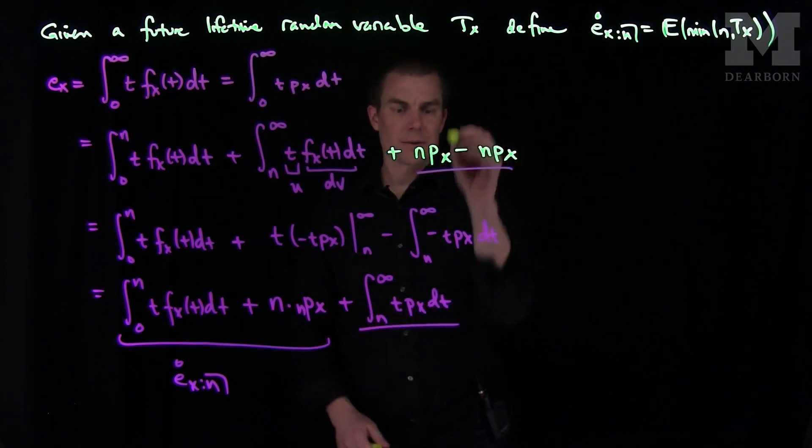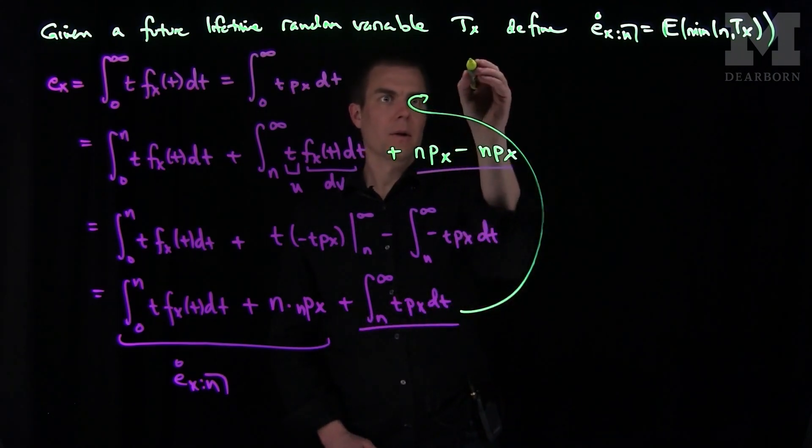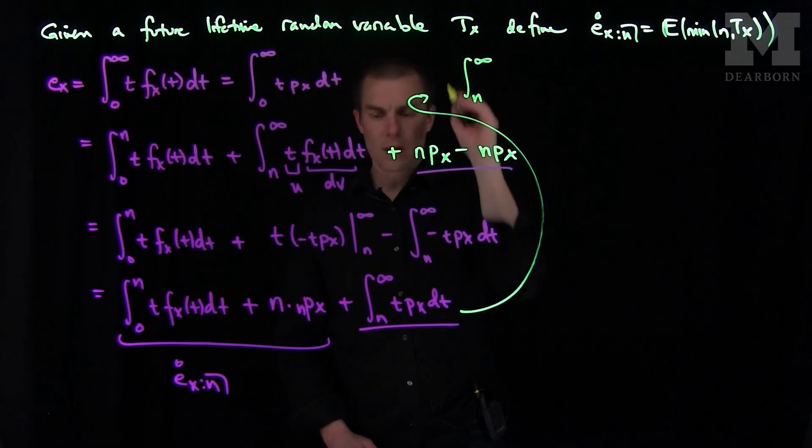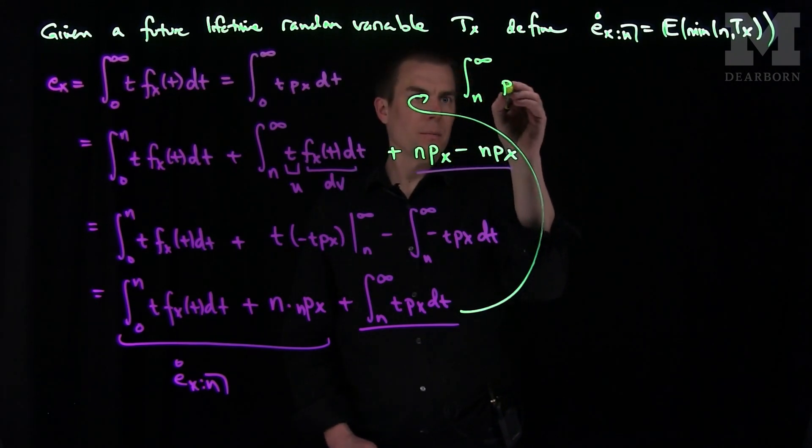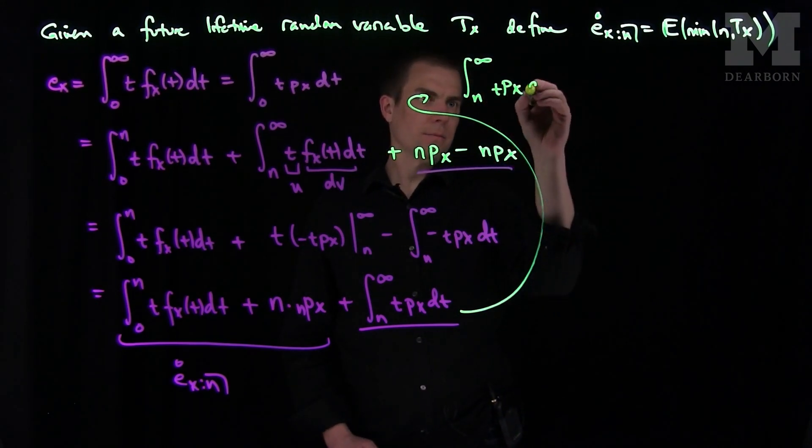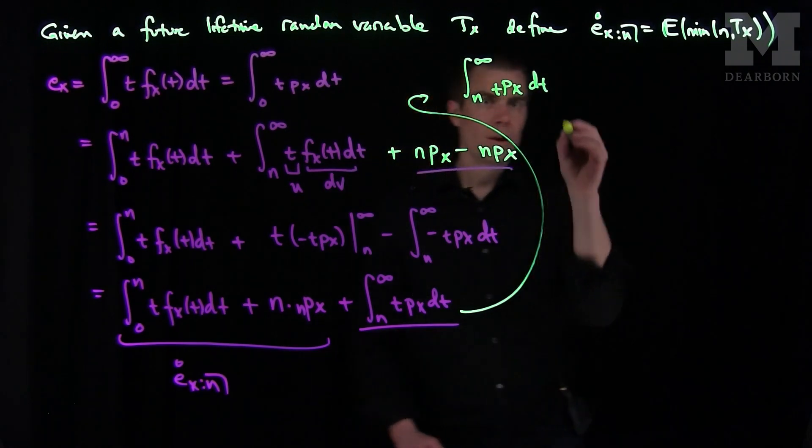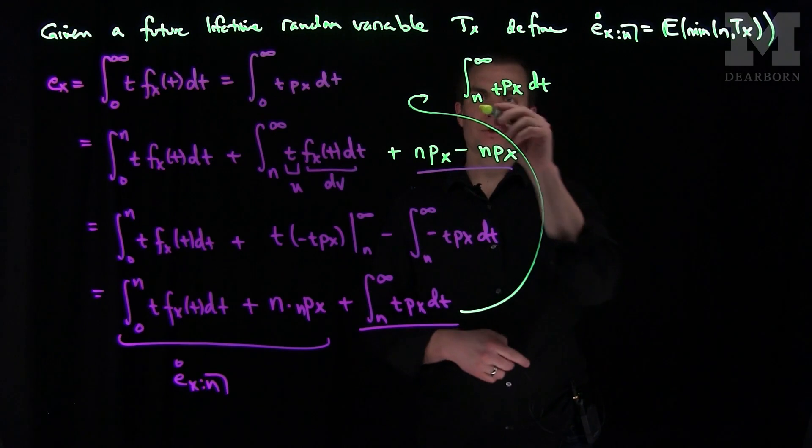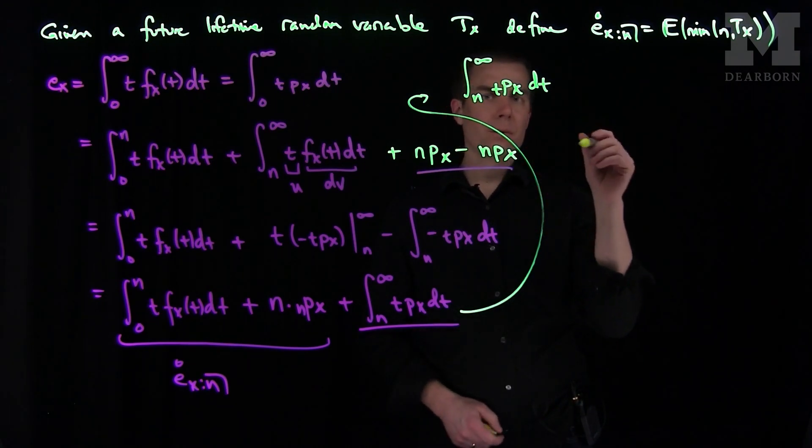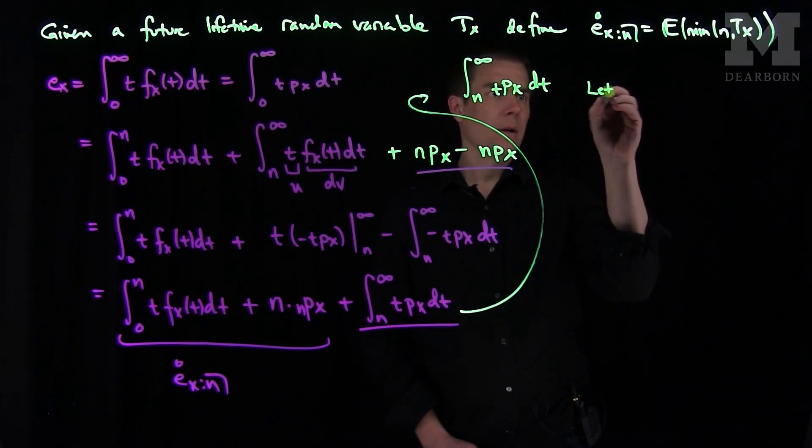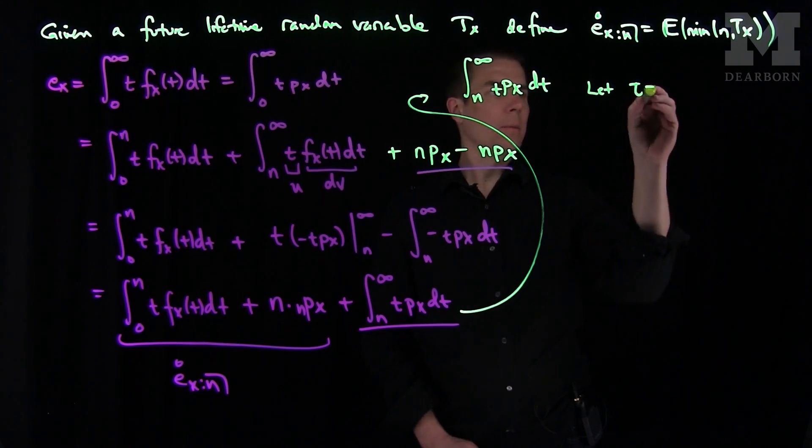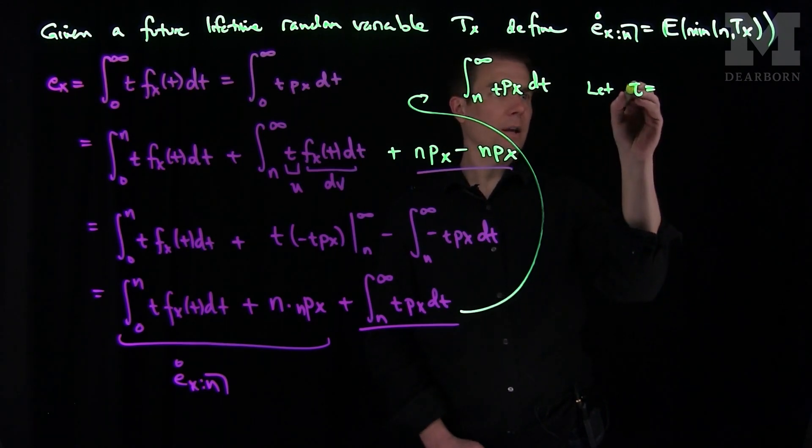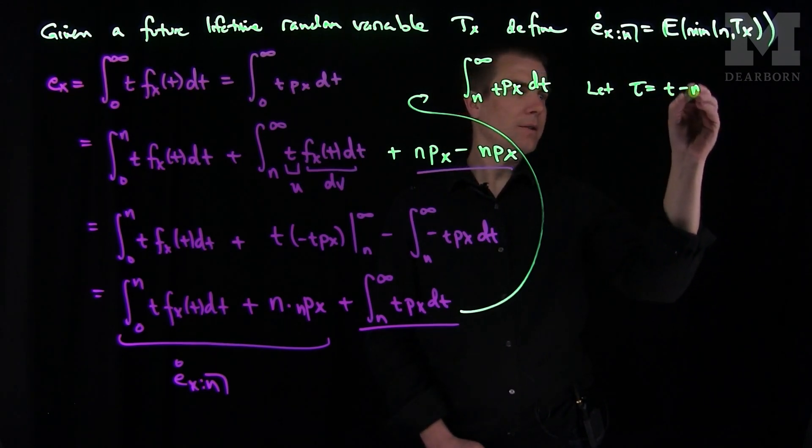Now let's analyze this term when we integrate from n to infinity of the survival function. Well what we can do is the following. Let's take the integral from n to infinity of the survival function pxt dt. Let's change the limits of integration. I want it to start this integral at 0. So we'll let tau be equal to t minus n.